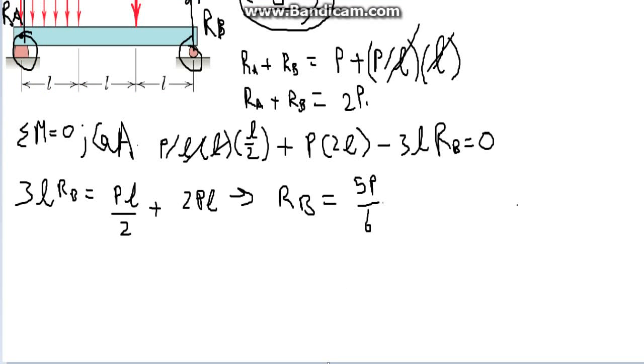This is the simple part. So we get a reaction force B, and if we substitute reaction force B, we get reaction force A as 7P on 6.